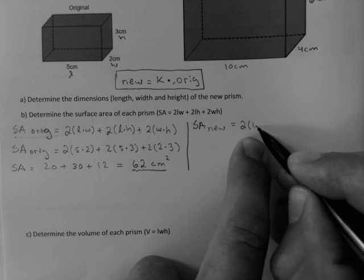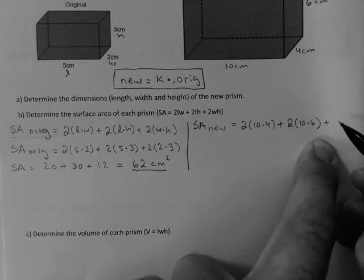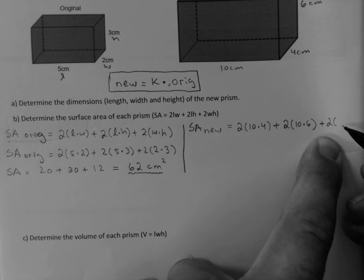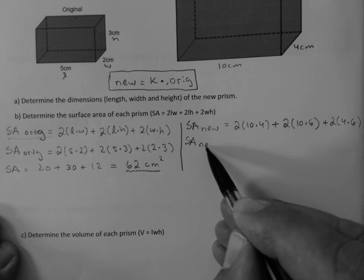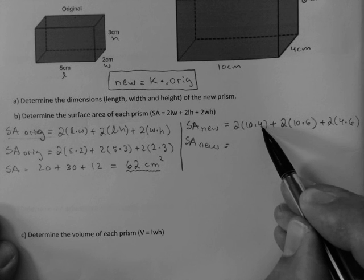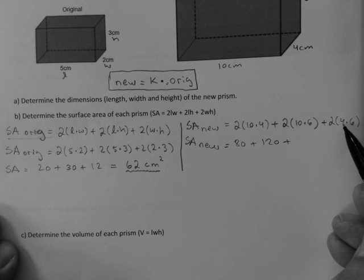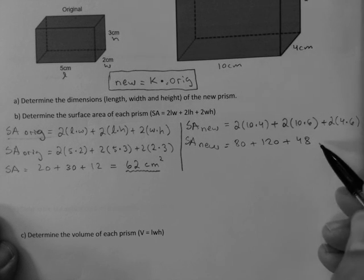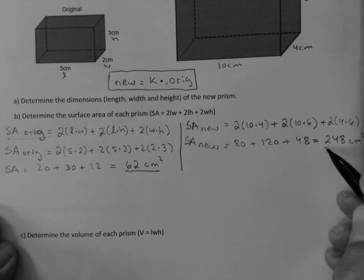Surface area of the new. Let's just jump right in. 2 times length times width, plus 2 times length times height, plus 2 times width times height. You thought you'd never use this again after EQAO, right? You're going to use it next year if you take grade 12, or next semester. It's coming back, it's not going anywhere. So surface area of the new shape would be 10 times 4 is 40 times 2 is 80, plus 10 times 6 is 60 times 2 is 120, plus 4 times 6 is 24 times 2 is 48. So that's 248 centimeters squared. Very important.